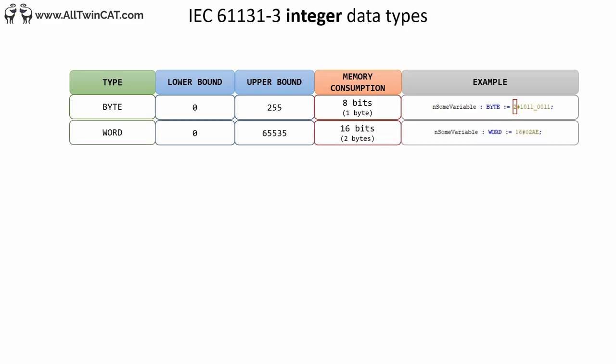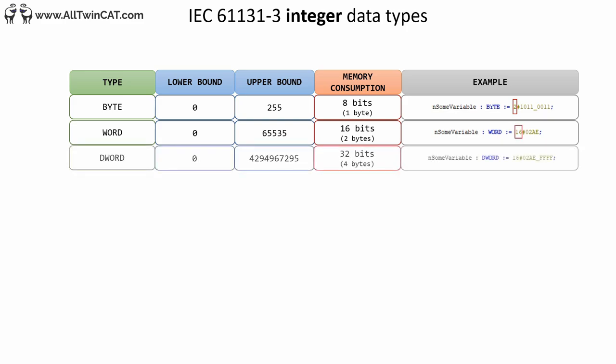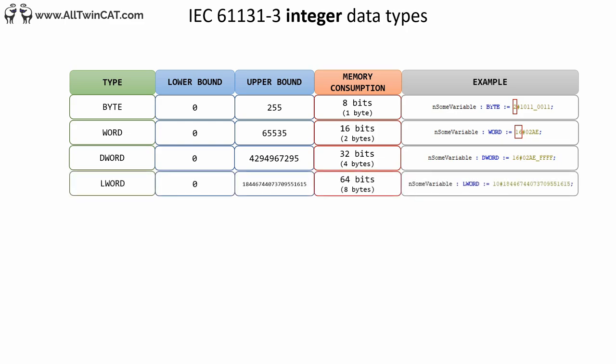Next we have the WORD data type, which is twice as big as a BYTE. Here I have declared a variable in hexadecimal format — that is with base 16. Next we have DWORD — a double word — which is twice as big as a WORD. Again, I've used base 16 for the value. Finally we have the huge 8-byte LWORD. Here I have assigned the value with explicitly base 10, though this is not necessary as it will implicitly be base 10.